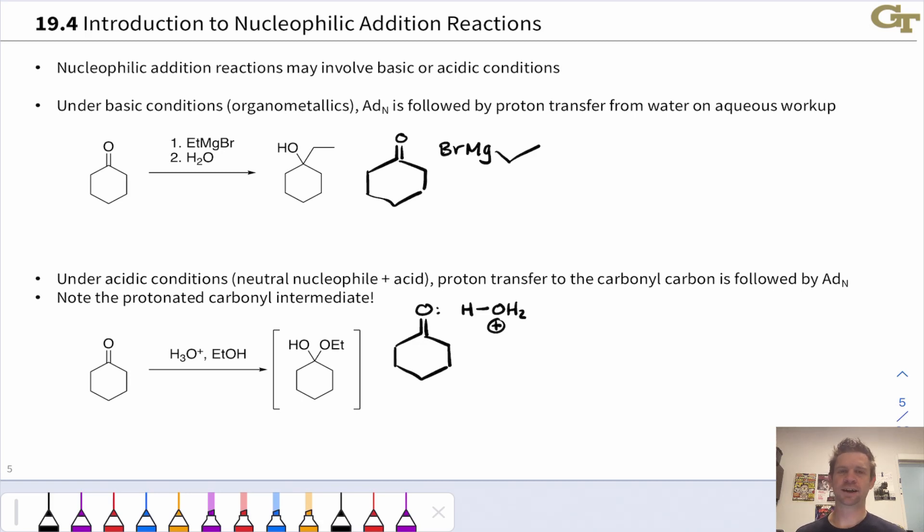Nucleophilic additions to ketones and aldehydes may be carried out under acidic or basic conditions. Basic conditions typically involve the use of a very strong nucleophile, something like a carbanion or hydride anion resembling reagent, like a Grignard reagent, or those complex metal hydrides that we've seen previously.